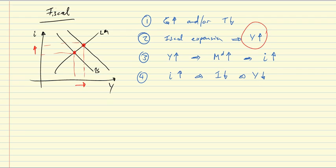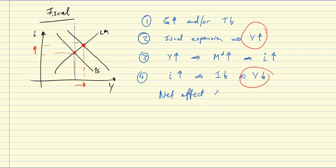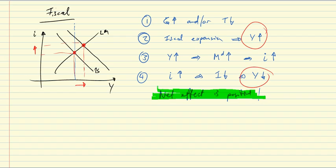So we have here an increase in income and here a decrease in income. It's quite easy to see though that as long as the LM curve is upward sloping — as long as the LM curve is not vertical — the net effect is positive. Fiscal policy leads through the multiplier process to higher output. Higher output leads to a higher interest rate which in turn reduces investment and reduces income, but the net effect is positive as long as the LM curve is not vertical.